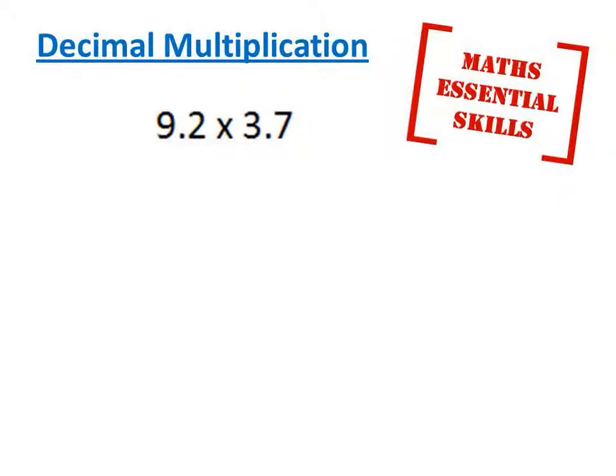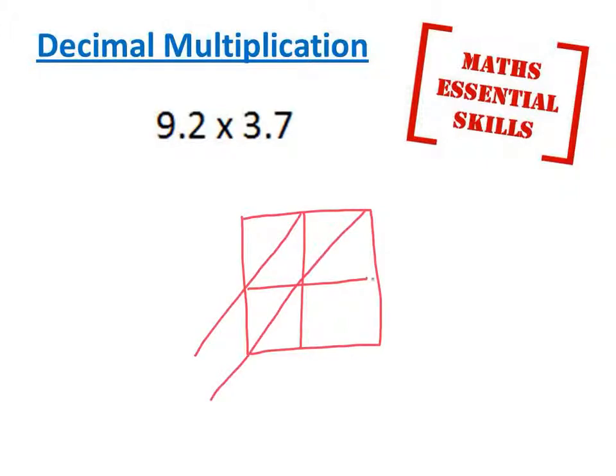We can also multiply numbers which are decimals using the same lattice multiplication technique. I'll lay out my grid, being careful to make sure the diagonals go from corner to corner. 9.2 times 3.7.